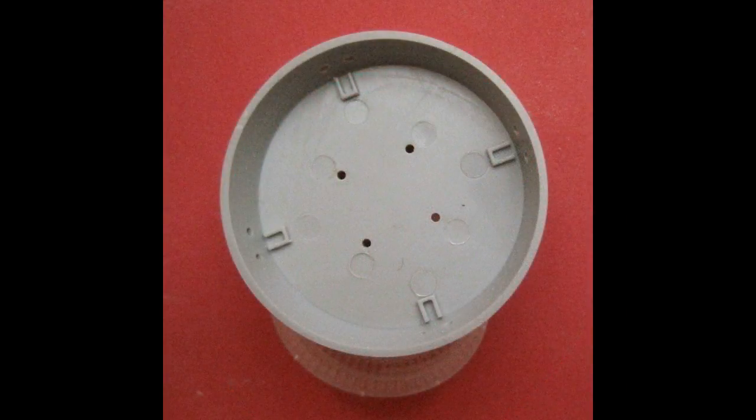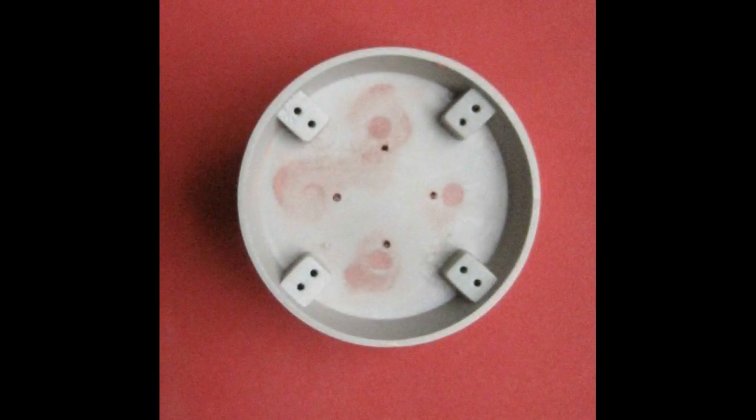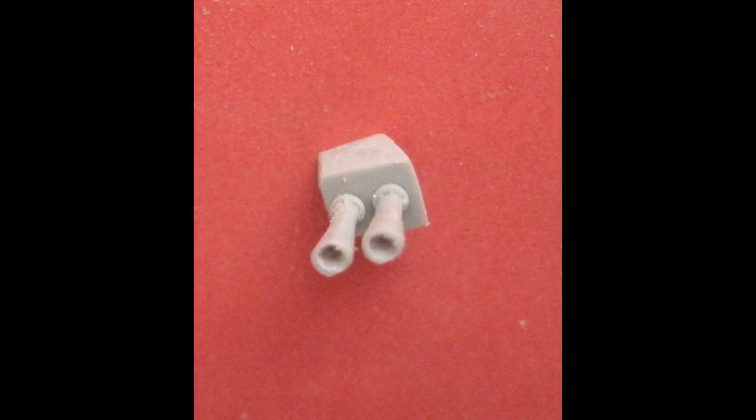There's some ejector pin marks in the bottom of the command module here. The one that's up towards the top at about 11 o'clock there, it'll be mostly obscured by the rocket nozzles that go on those bezels. But the other four next to the holes, they should be filled and smoothed out. Go ahead and grab the rocket nozzles for the thrusters there. You can go ahead and assemble those. They're pretty simple affairs. Just clean up the side blocks there, or the base, I should say, and the nozzles themselves, and set those aside to dry for later.